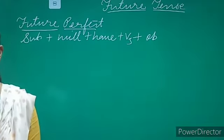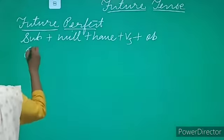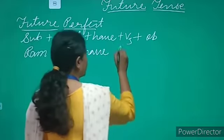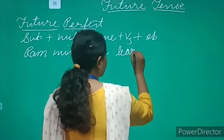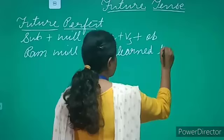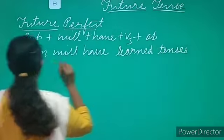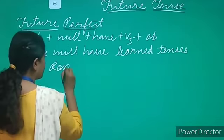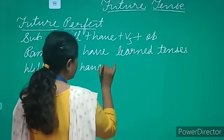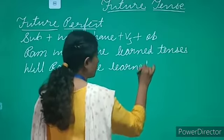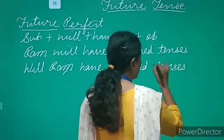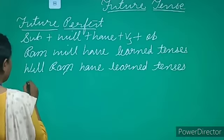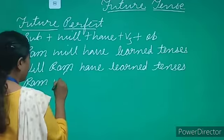Let's take an example and understand it. The affirmative sentence is: 'Ram will have learned tenses.' If you want to frame the question, it becomes: 'Will Ram have learned tenses?' And if you want to change it into a negative sentence, you write: 'Ram will not have learned tenses.'